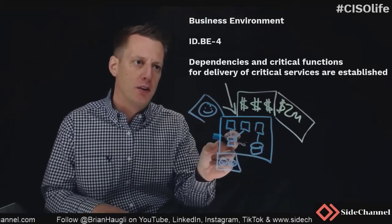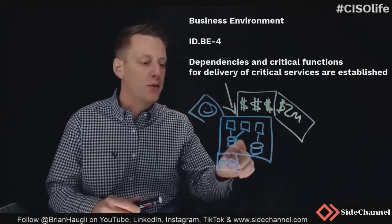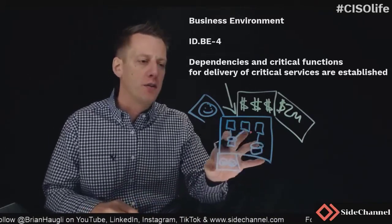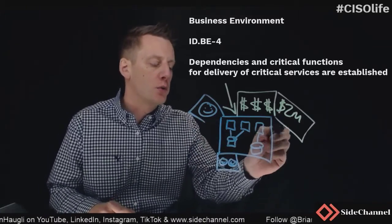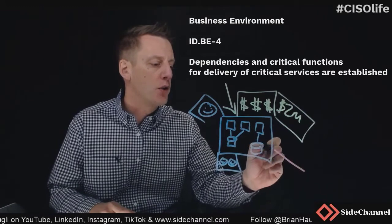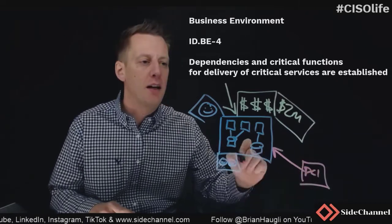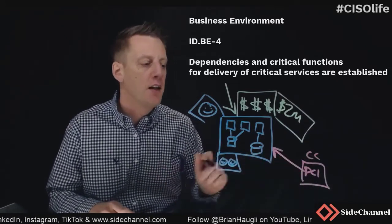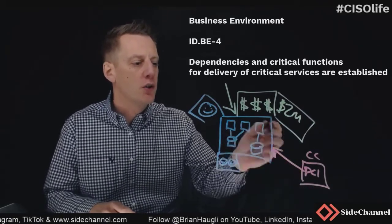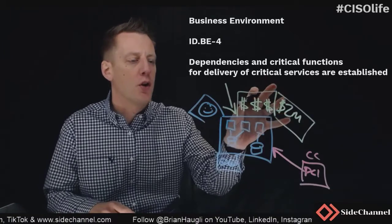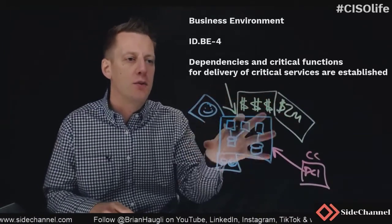But are there critical services required for the delivery of those critical services to make this all possible? It could sit within this setup or be coming from outside. Using PCI as an example: if you're doing credit card payments, you may have determined there is a critical third-party vendor handling your PCI compliance by doing all of your credit card processing. Have you identified this critical service within your overarching revenue generation risk?